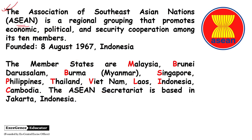The full form is Association of Southeast Asian Nations. It is a regional grouping that promotes economic, political, and security cooperation among its 10 members. It was founded on 8th August 1967 in Indonesia.